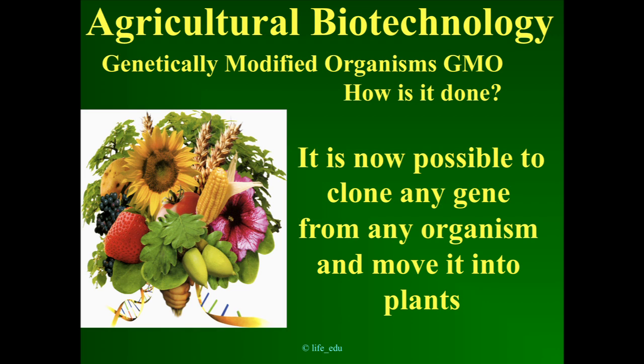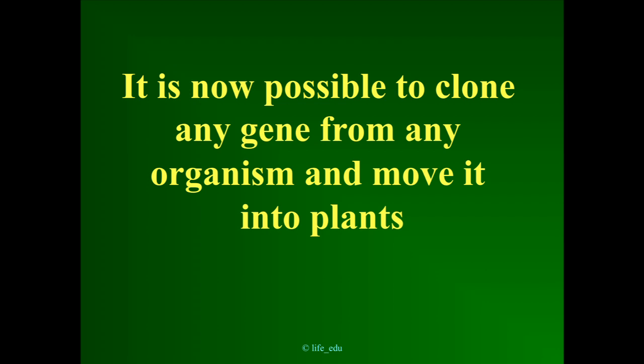It's possible to clone any gene from any organism and move it into plants. I could take a DNA sample from you, isolate your DNA, clone the gene that codes for your hemoglobin — that would take about nine days. I could then put that into an expression cassette allowing that gene to be expressed in plants, introduce it into corn cells, and grow back an entire corn plant expressing your gene for hemoglobin. That would take nine months. That's an example of how this technology could be applied.